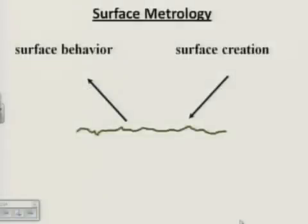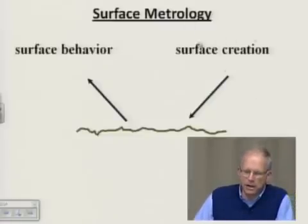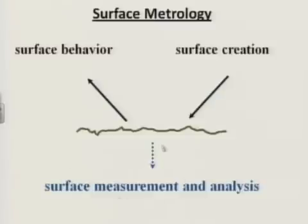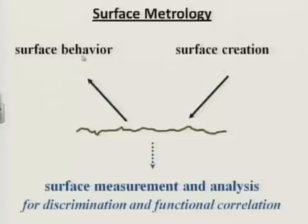Roughness analysis is part of surface metrology. In surface metrology, we consider how a surface is created or manufactured, and how the surface behaves. In order to study this, we measure and analyze the surface geometry or texture. What we're looking for is to see if we can tell surfaces apart that may have been created differently or behave differently, and to find functional correlations with surface creation parameters, such as machining or grinding, or even corrosion or wear, and with surface behavior, things like adhesion or friction.